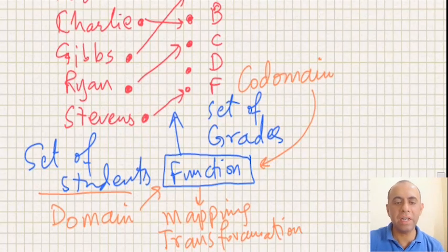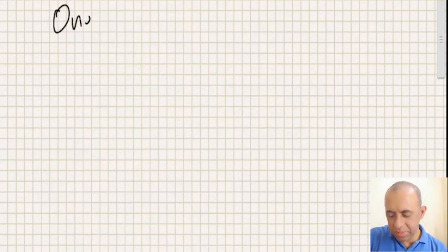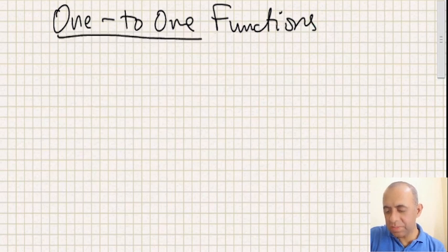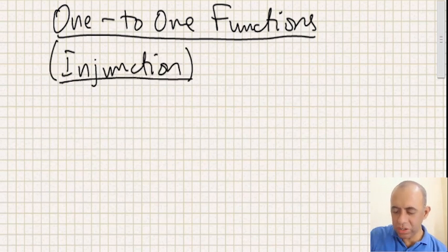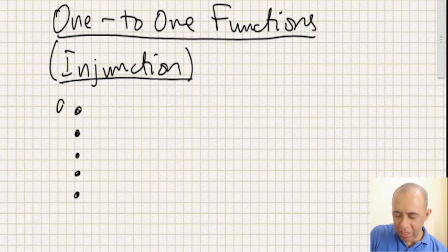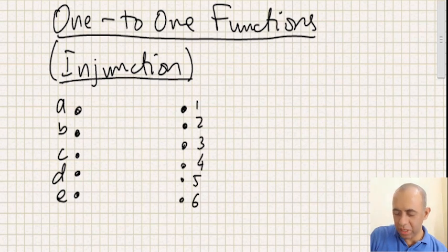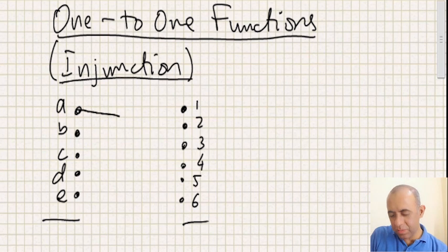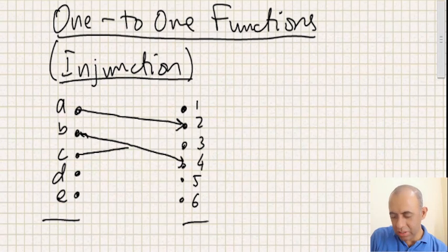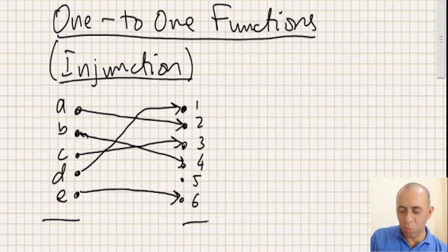There are different types of functions. The first type is called one-to-one functions — also known as injections. A one-to-one function is when you have a set of elements, for example A, B, C, D, E as the domain and 1, 2, 3, 4, 5, 6 as the codomain, and each element maps to a distinct element in the codomain.